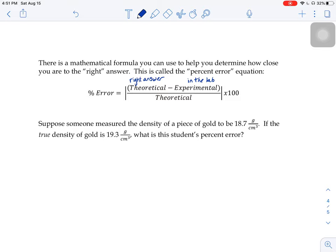Let's say you were doing a lab where you're measuring the density of a piece of gold and a student went into the lab and they got a result of 18.7 grams per cubic centimeter. But if the true density of gold is 19.3, what would the percent error be?